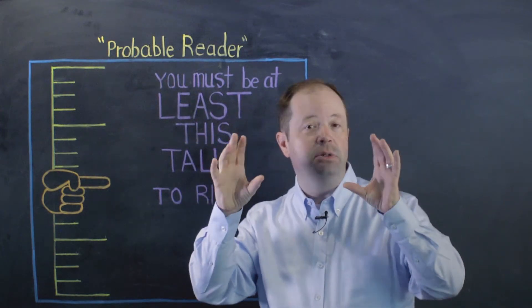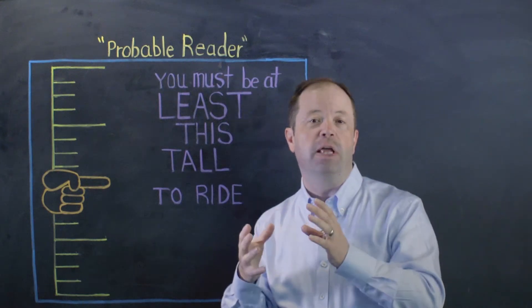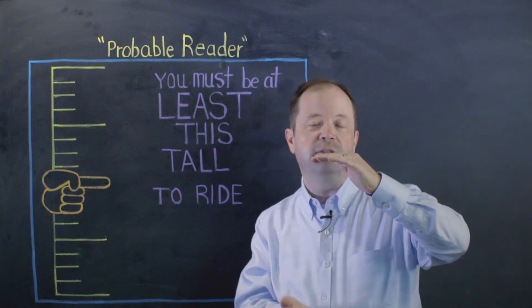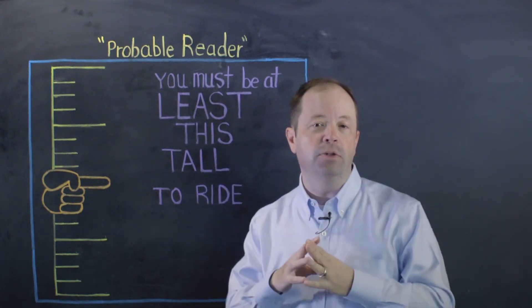Probable Reader is the most advanced content in STAR early literacy, and it actually represents the overlap between the most advanced content in STAR early literacy and the beginning of the lowest content in STAR reading and STAR math.